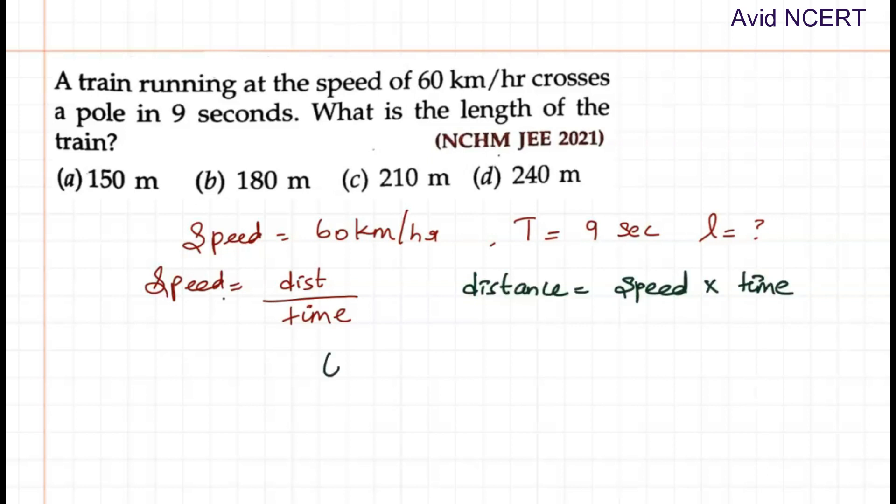So speed we have here is 60 km per hour and time we have here is 9 seconds. So the units are different. It should be either kilometer per hour or meter per second. So we can convert the kilometer per hour to meter per second by multiplying it by 5 by 18.